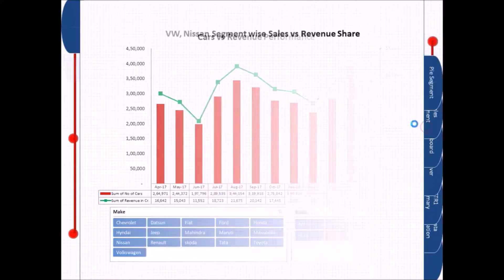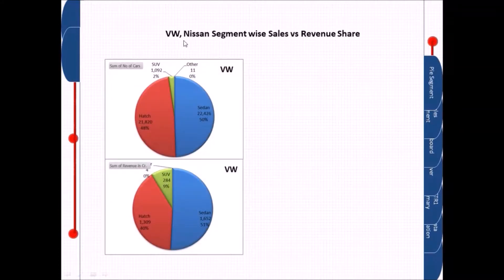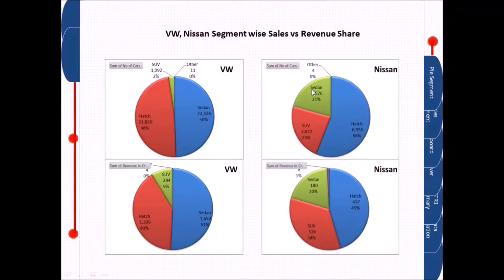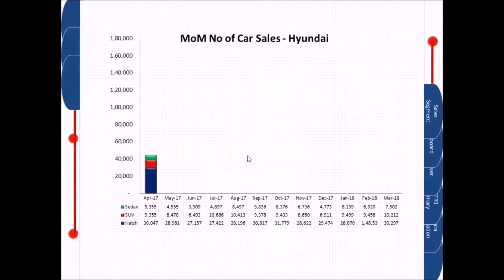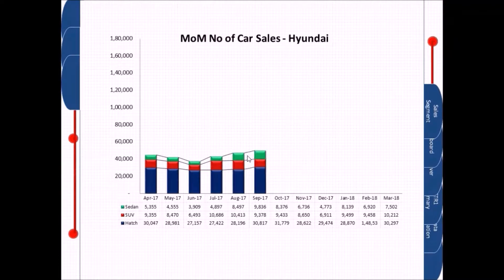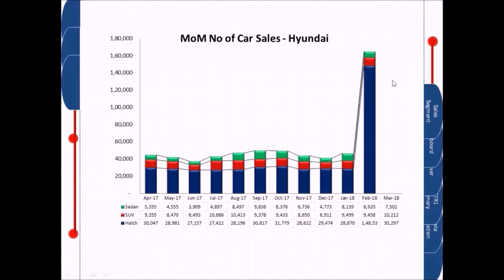This slide will be represented with the make and body changes. Here I am showing Volkswagen and Nissan segment-wise sales and revenue share, where SUV for Volkswagen is sharing 2% like revenue is generating 9%. Same goes for Nissan: 23% sales is generating 34% revenue for Nissan Motors.